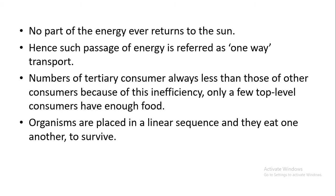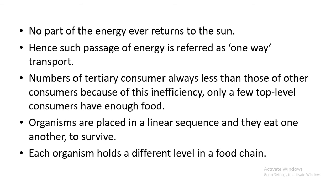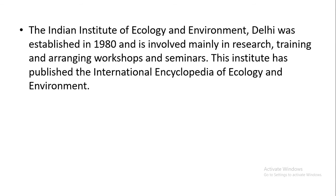The number of tertiary consumers is always less than those of other consumers because they are less efficient and their numbers are always lower when they are at the topmost level. Organisms are placed in a linear sequence and they eat one another. In any food chain, organisms are dependent on each other to survive, and each organism holds a different level or position in the food chain — some are at the second trophic level, some at the third — so each organism occupies a different trophic level within the food chain.